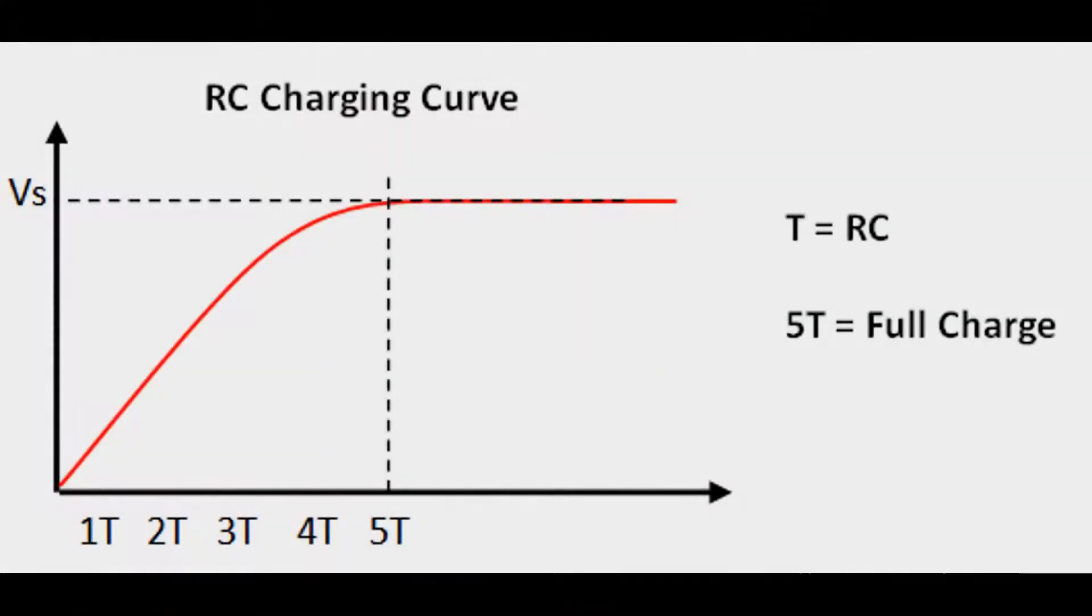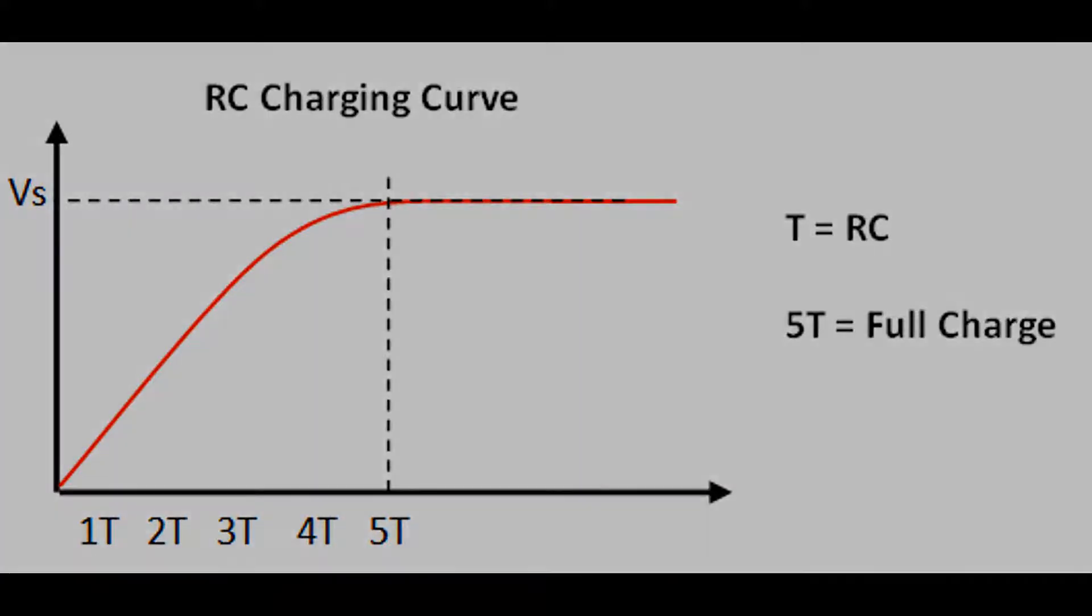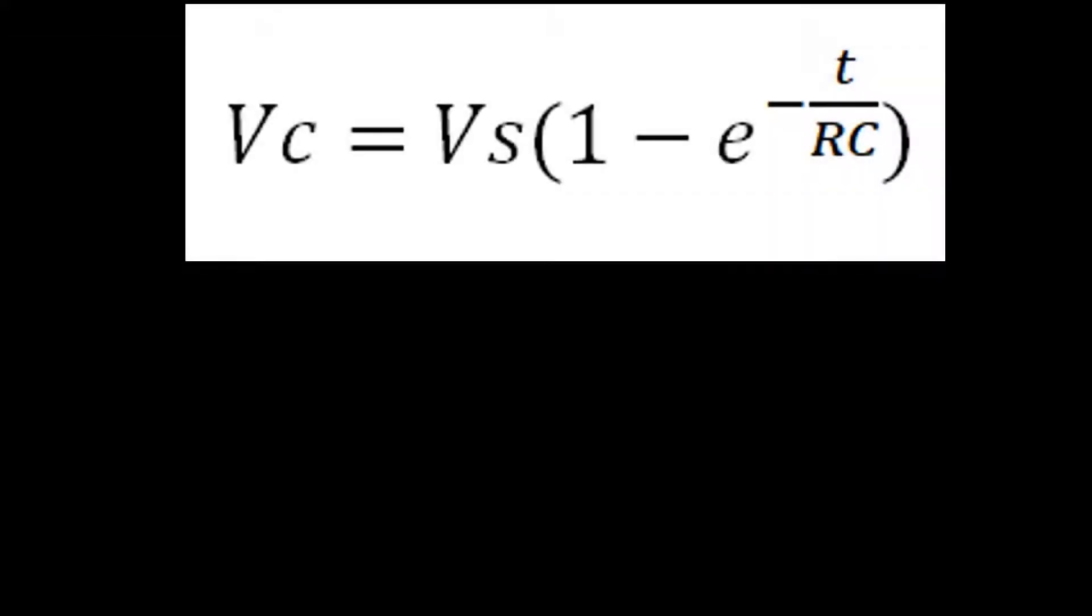Let's look at the example curve most literature gives. So 5T should show VC equals VS. If we now analyze the full equation for the exponential we'll find out the answer. So VC equals VS bracket 1 minus E to minus T divided by RC close bracket.